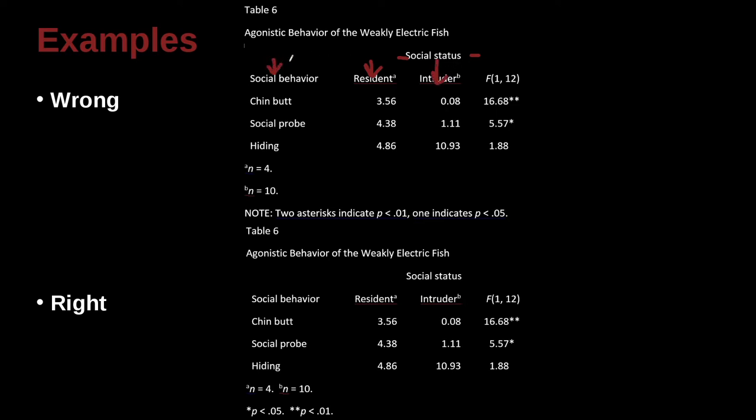Social behavior is the column heading here, and we've got these behaviors that the fish undergoes. And then we've got our numbers in here. How are they looking? Two decimal places. They all have two decimal places. That looks good.